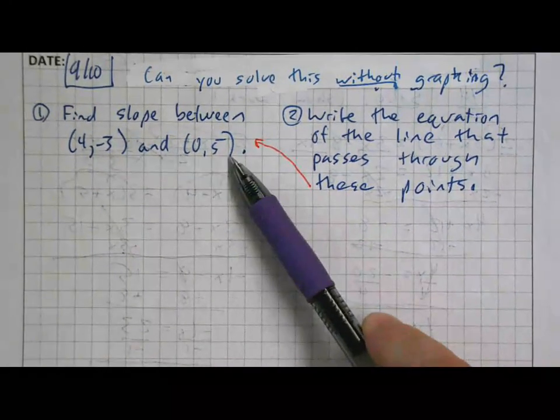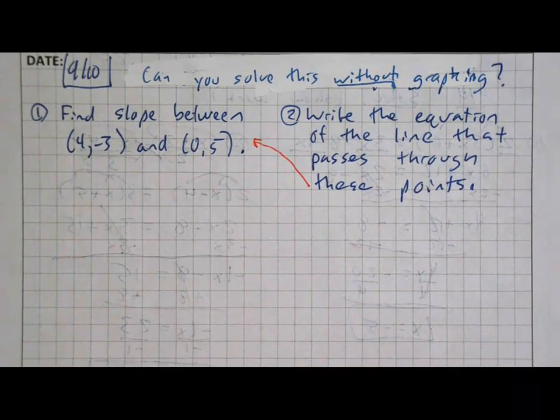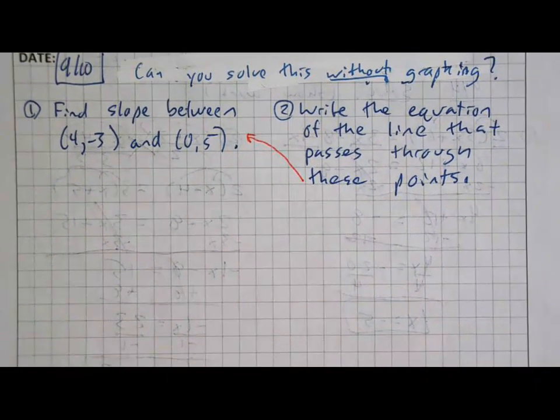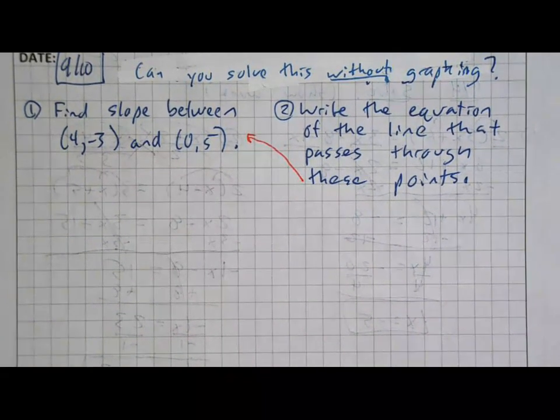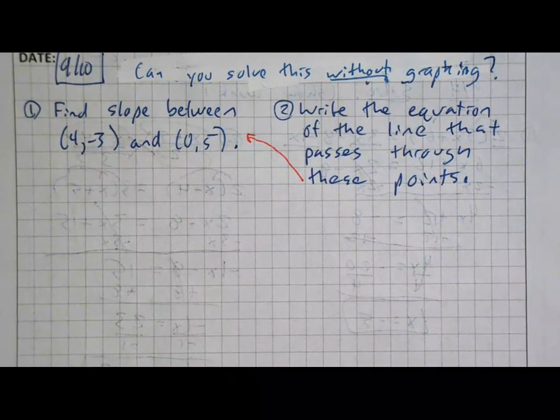Or what if this wasn't 0, 5, what if it was 0, 5.723? So if the values get complicated, then you want to be able to deal with the numbers rather than try and graph it.